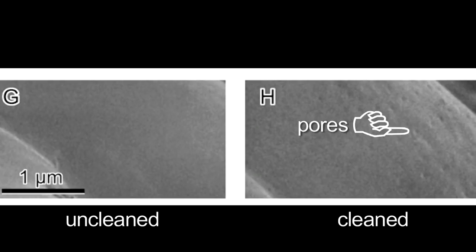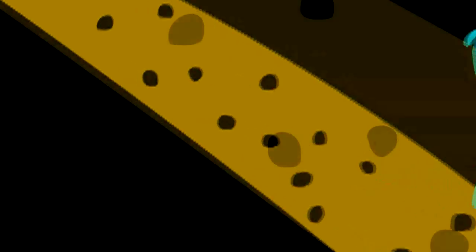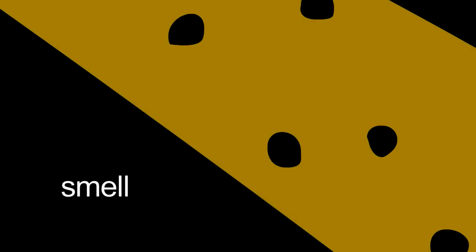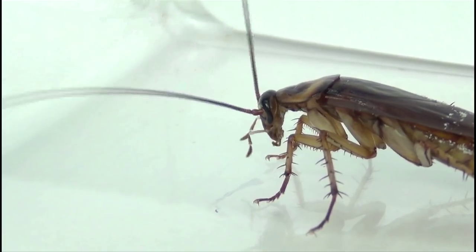Cockroaches use these pores to smell. The cuticular pores serve to deliver the smell molecule into the inside of the hair, which contains the olfactory neurons. And when the pores are gunked up with the cuticular hydrocarbons, the antennae weren't as receptive to scents, Shaw found.